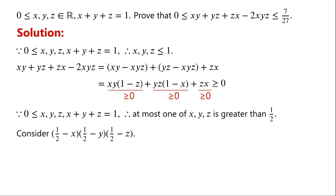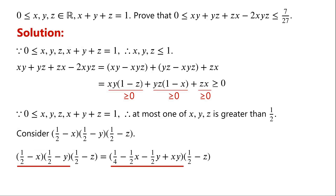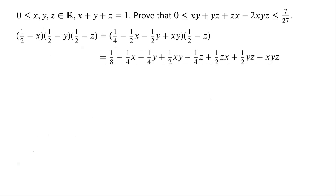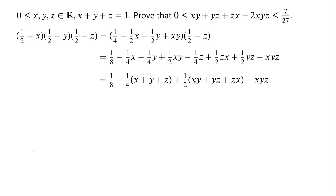By expanding, (1/2 minus x) times (1/2 minus y) equals 1/4 minus (1/2)x minus (1/2)y plus xy. Continuing to expand, we can write this equals 1/8 minus (1/4)x minus (1/4)y plus (1/2)xy minus (1/4)z plus (1/2)zx plus (1/2)yz minus xyz. Collecting terms with the same coefficients, this equals 1/8 minus (1/4)(x plus y plus z) plus (1/2)(xy plus yz plus zx) minus xyz.